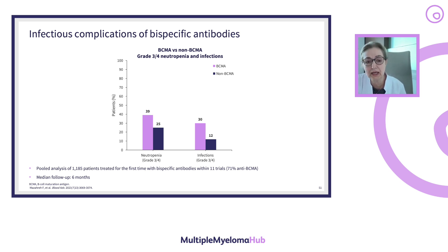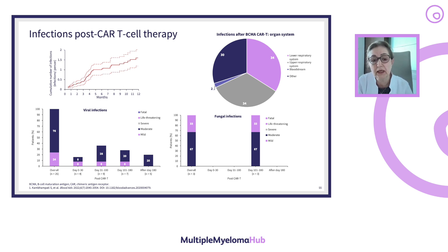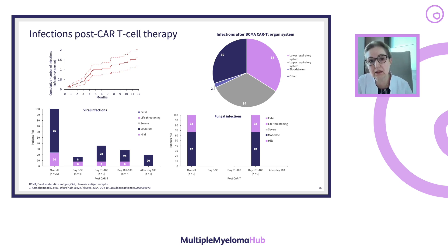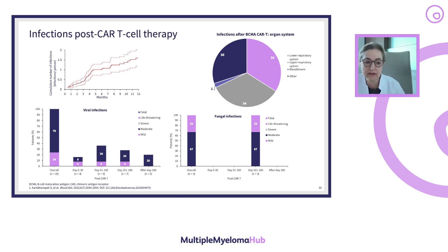A recently published guideline addresses the nature of infections after CAR-T or bispecific treatment, which relies on treatment responsiveness. During the first months with high myeloma burden, infectious complications are high, but with gaining of response and marrow recovery, infectious morbidities become less. There is a well-balanced distribution of upper versus lower respiratory infections and bloodstream infections. Fungal infections are less common initially and tend to appear in later phases.